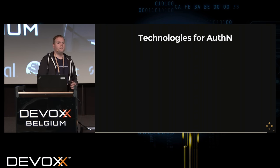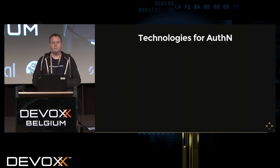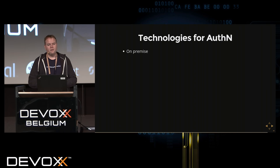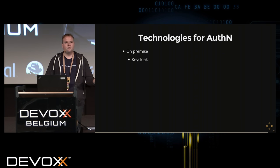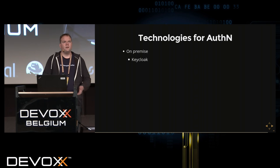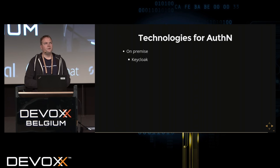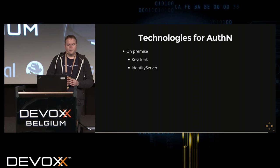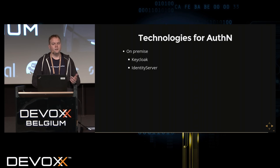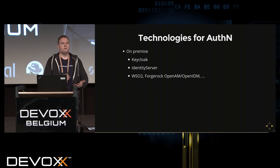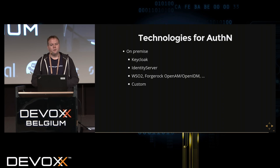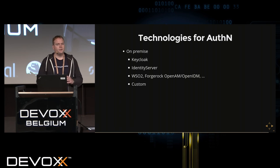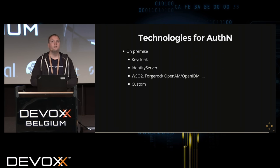What technologies are available for a Java developer? You can start with Keycloak — an open-source offering you can run locally or for your enterprise, providing authentication as a software appliance. Alternatively there is the IdentityServer (built in C#) and other offerings. You can run these on-premise as your central authentication server. Please don't write your own — use tools and frameworks that support these standards.